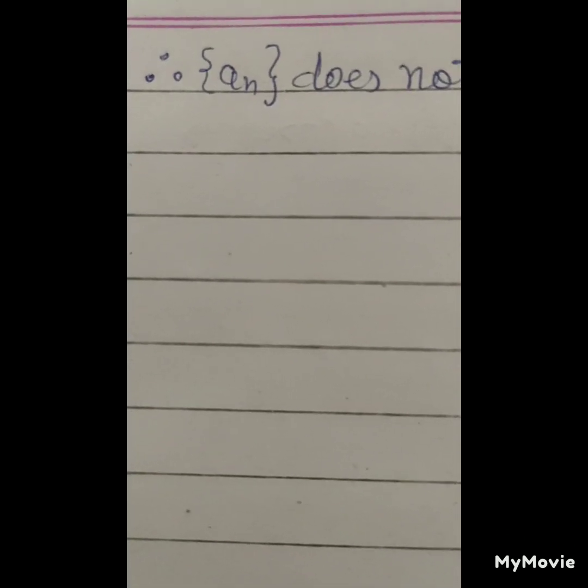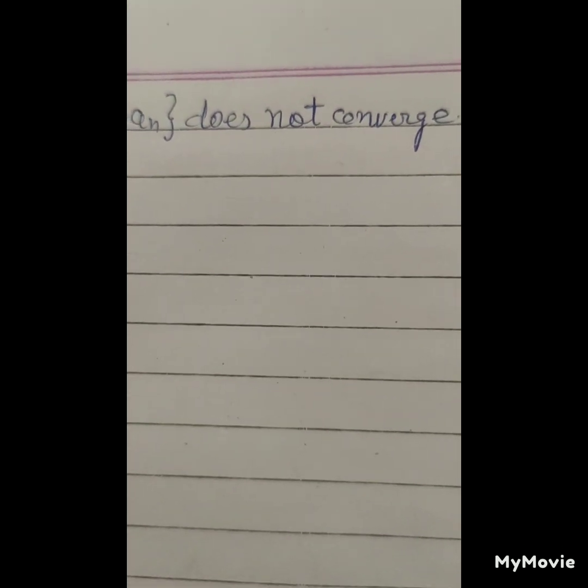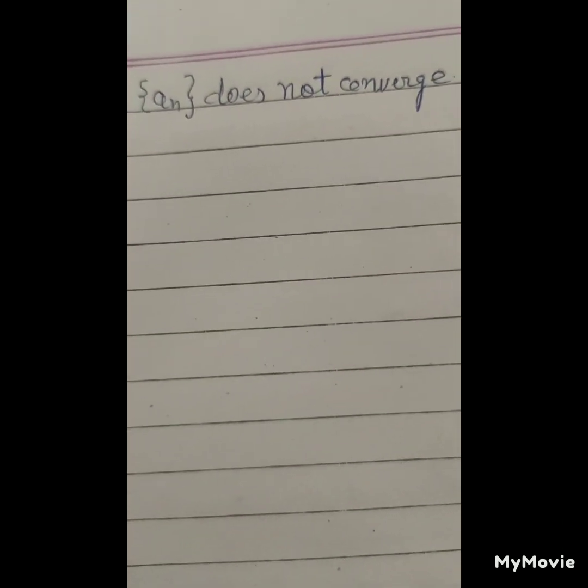Therefore, |a_{2n} - aₙ| ≥ 1/2 for all values of n. Hence aₙ is not a Cauchy sequence, and so the sequence aₙ does not converge.